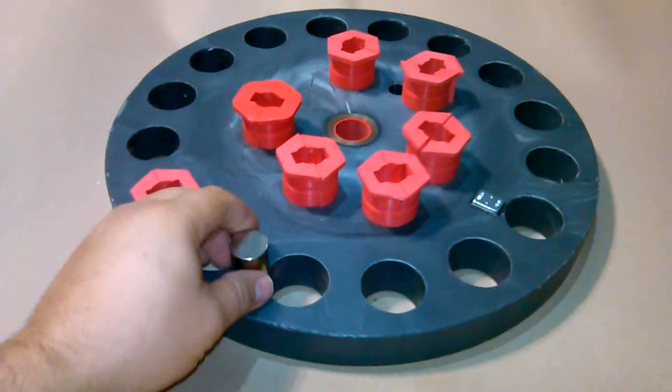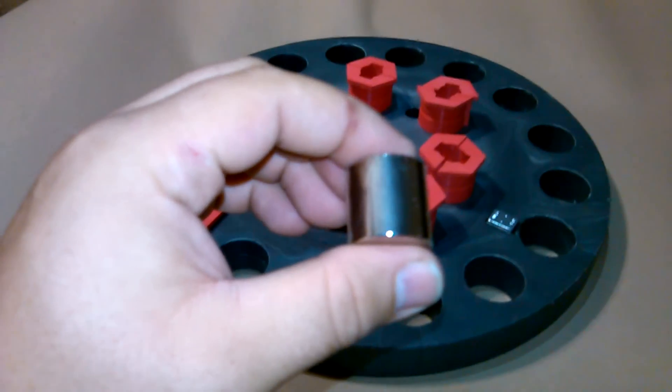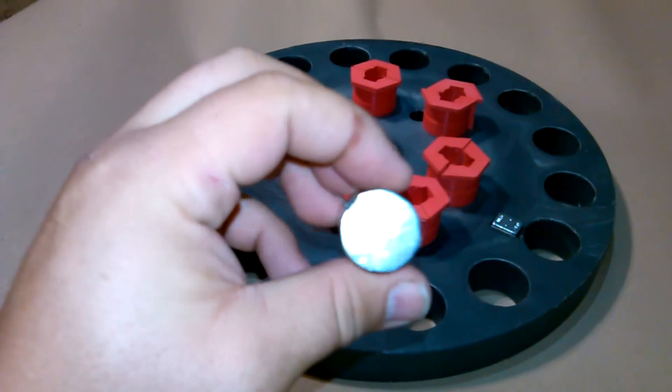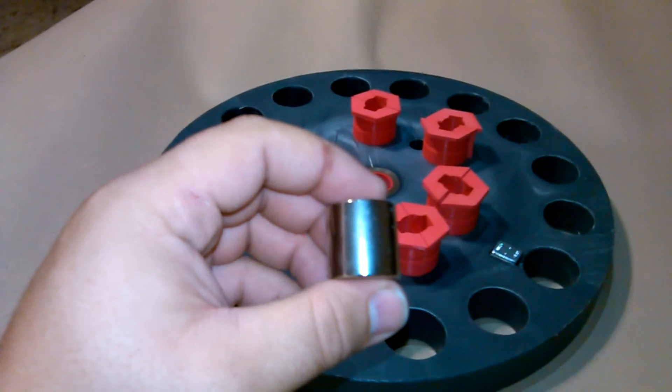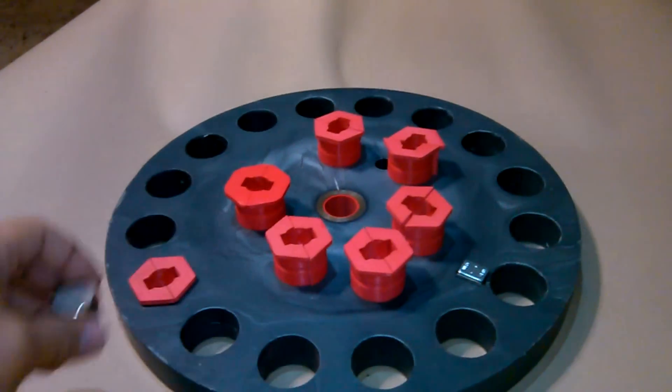So right here you can see the rotor. This is the neodymium magnet, it's a one inch by one inch magnet, and that's just like what we talked about on the animated video, so we're matching everything up there.